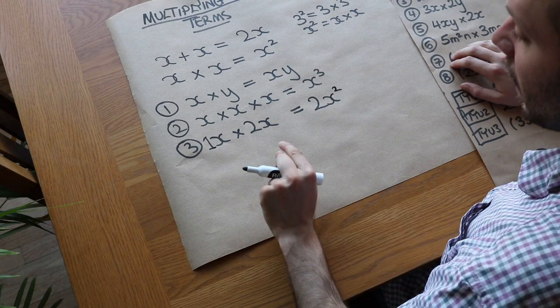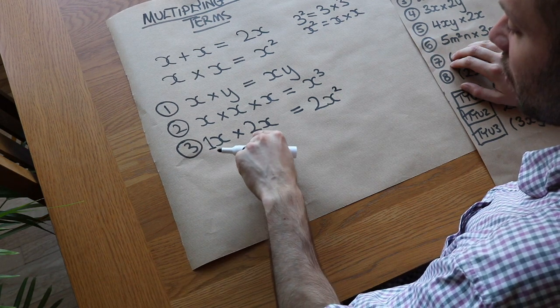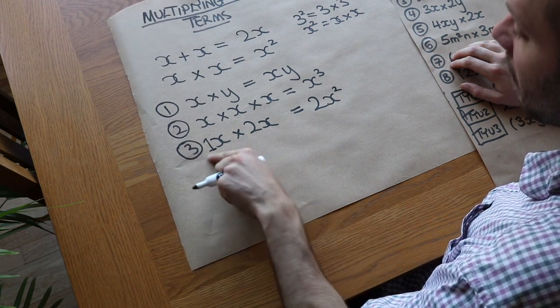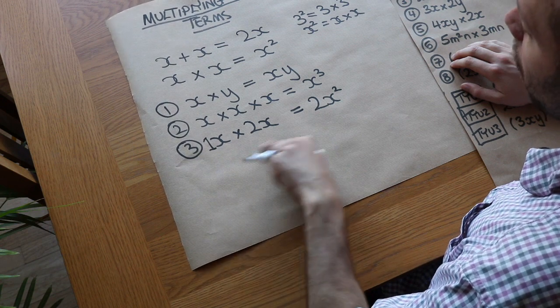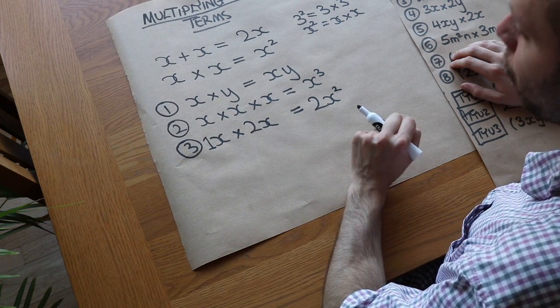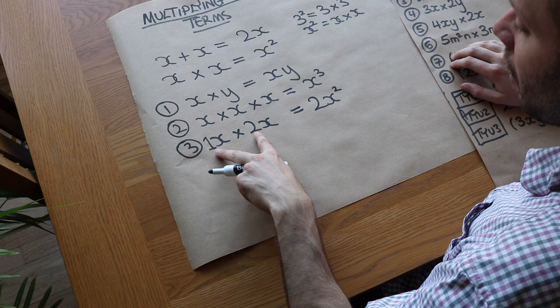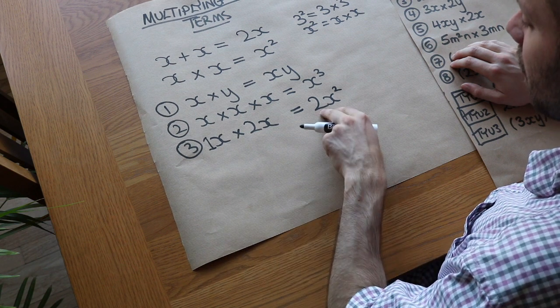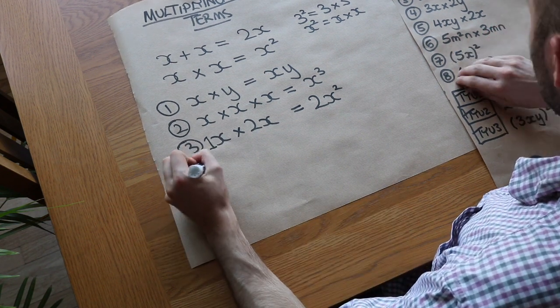Remember that, ultimately, this just means 1 times x times 2 times x. So everything is being multiplied together. And when we multiply things together, it doesn't matter what order you multiply them in. So we might as well multiply the numbers together first, and we put the number on the front.